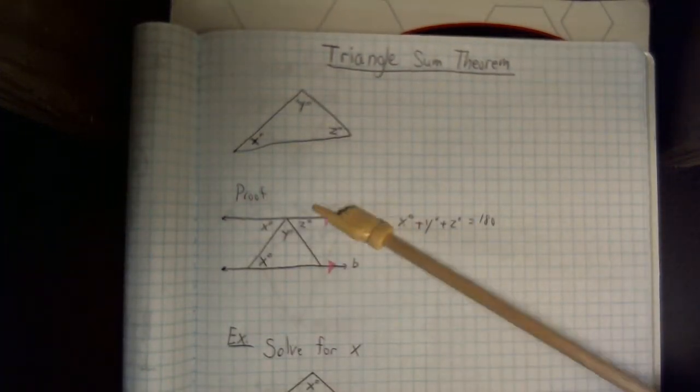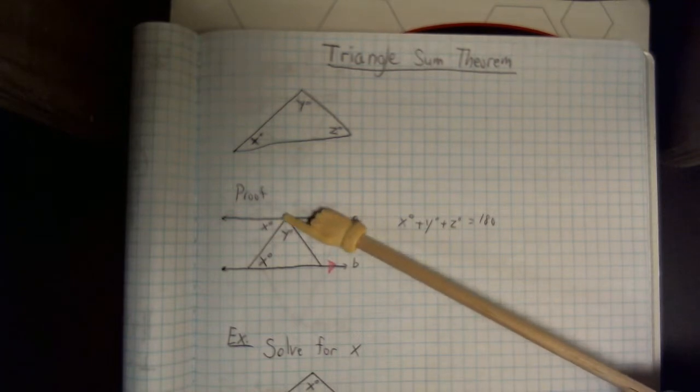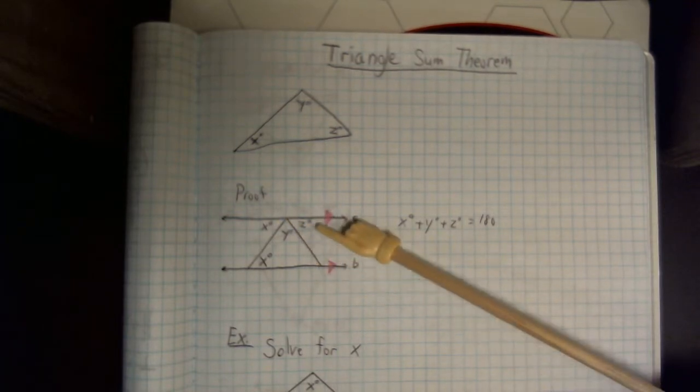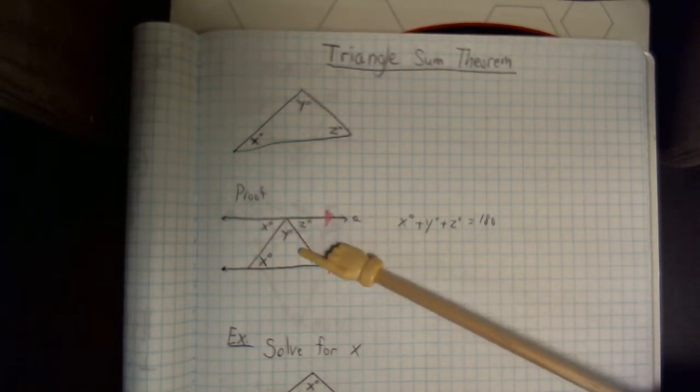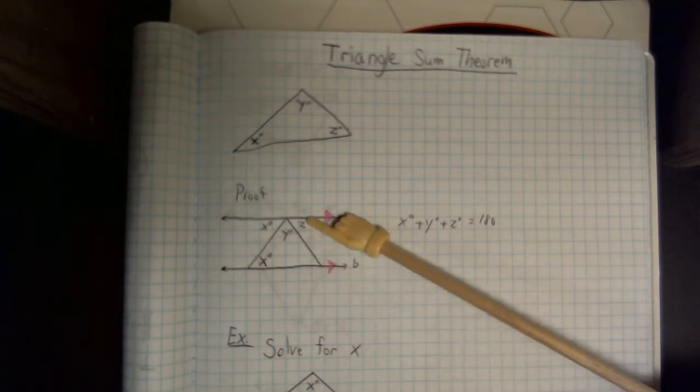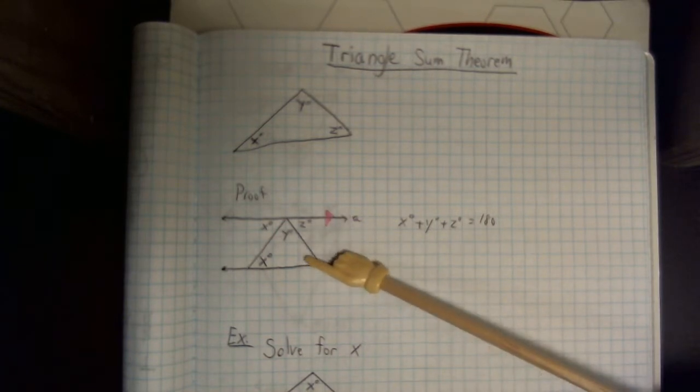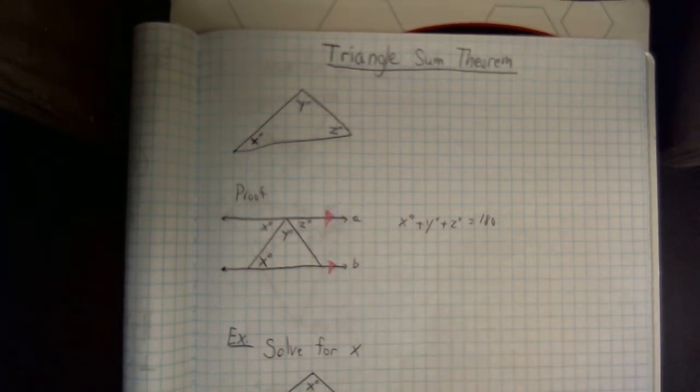And guess what? Same idea happens right here. We have the parallel lines and the transversal. z is on one side of the transversal. If I put it on the other side, they become alternate interior angles. That makes this angle z degrees.